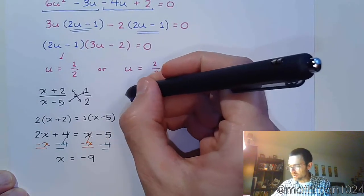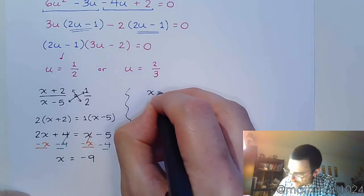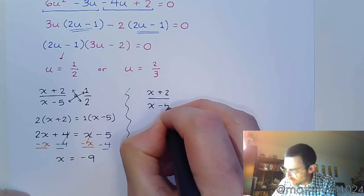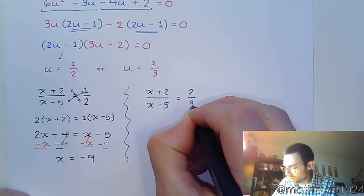Alright, so the other half of this, again, u is the placeholder for x plus 2 over x minus 5. This equals 2 thirds.